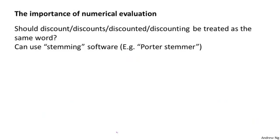Lastly, when developing learning algorithms, one other useful tip is to make sure that you have a numerical evaluation of your learning algorithm — a way of evaluating it that gives you back a single real number, maybe accuracy or maybe error, that tells you how well your learning algorithm is doing. For example, let's say we're trying to decide whether or not we should treat words like discount, discounts, and discounting as the same word. Maybe one way to do that is to look at the first few characters in a word to figure out that all these words have similar meanings.